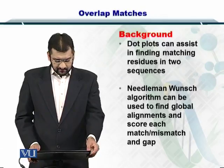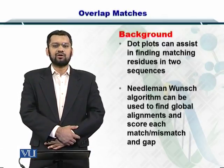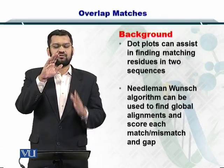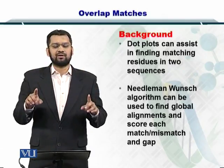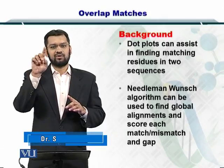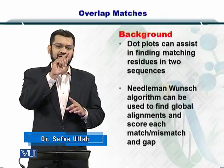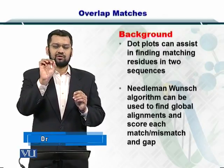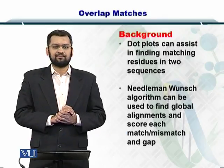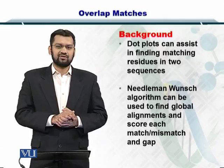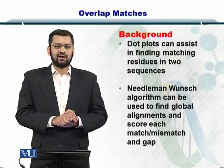To start with, we employed the dot plots and we placed one sequence on top and the second sequence on the left side of a dot matrix plot. And for each nucleotide in the top sequence, if it matched each nucleotide on the left side, then you place the dot on the corresponding position. If there was not a matching nucleotide or amino acid, you left that position empty.